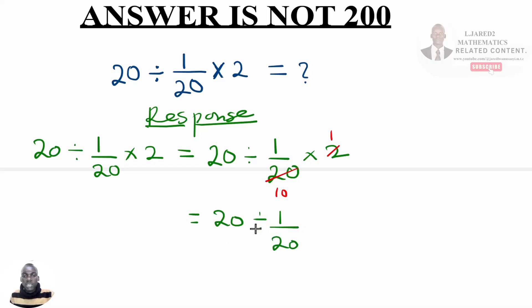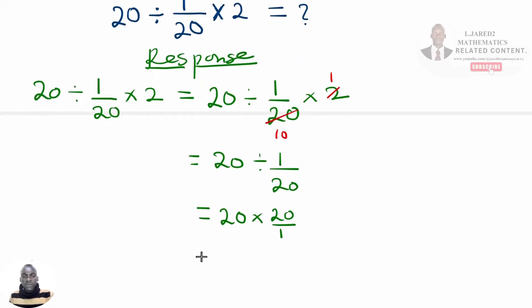Whereby this is a division sign, we change it to multiplication sign and get a reciprocal of 1 divided by 20. Meaning that we have 20 multiplied by 20 divided by 1. So if it is proceeded, we shall have 20 multiplied by 20.